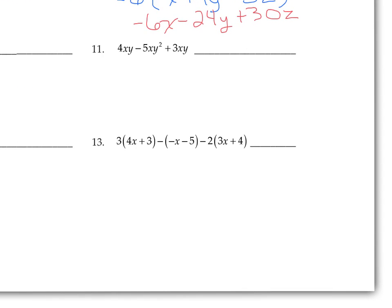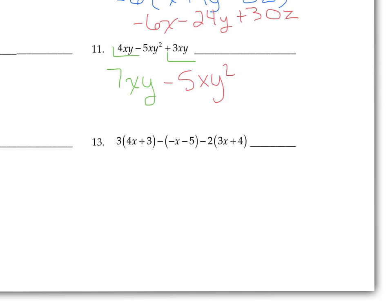On number 11, first identify the like terms. We have XY, then XY squared — those are not like terms. But the first term 4XY and the last term 3XY are like terms, so we add the coefficients: 4 plus 3 makes 7XY. The middle term, negative 5XY squared, doesn't have anything to add to, so we just tack it on. The result is 7XY minus 5XY squared.